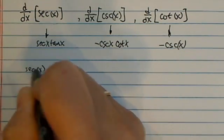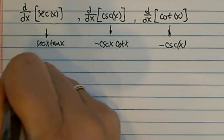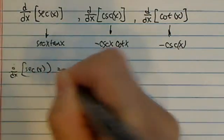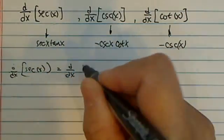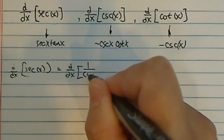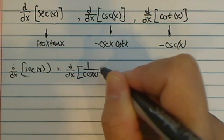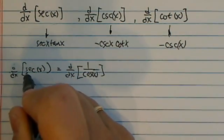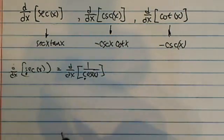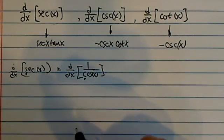Secant of x, derivative of this one, you need to rewrite the secant as d/dx. Secant is 1 over cosine of x. One way to remember is secant starts with s, 1 over cosine starts with c.